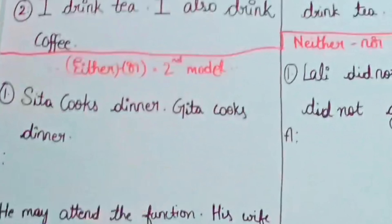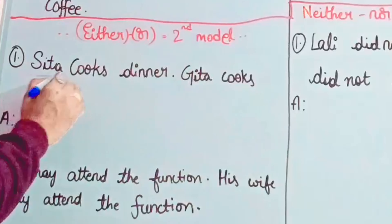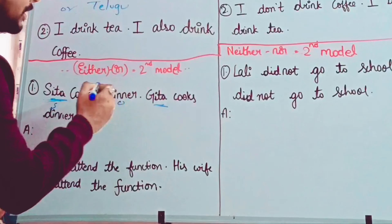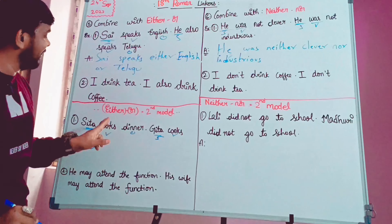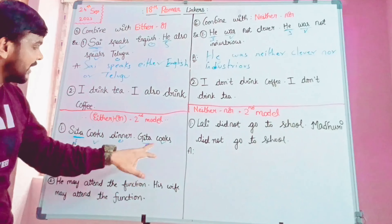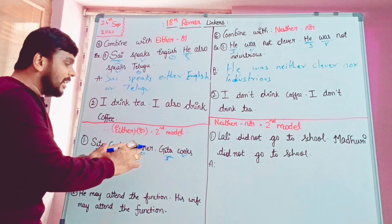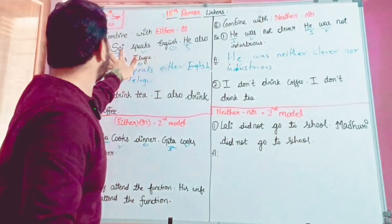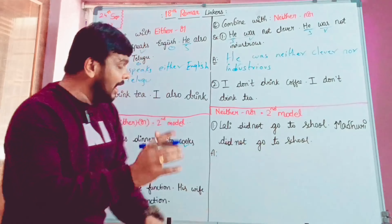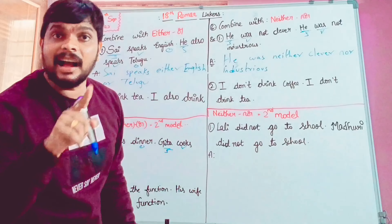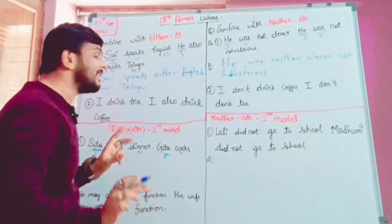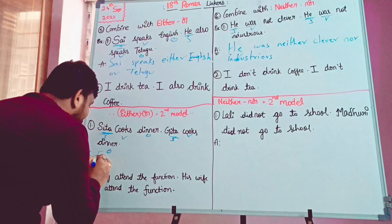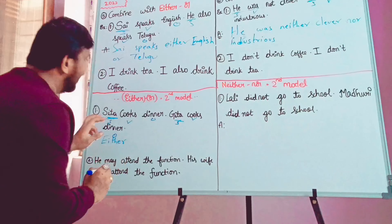Model 2. Seta cooks dinner. Geta cooks dinner. Here, one name is Seta, another is Geta. We have subject, verb, object — subject, verb, object. First sentence: subject, verb, object. Second sentence: subject, verb, object. So: Seta cooks dinner. Geta cooks dinner. First sentence subject and second sentence subject are different. So we will try either or neither.